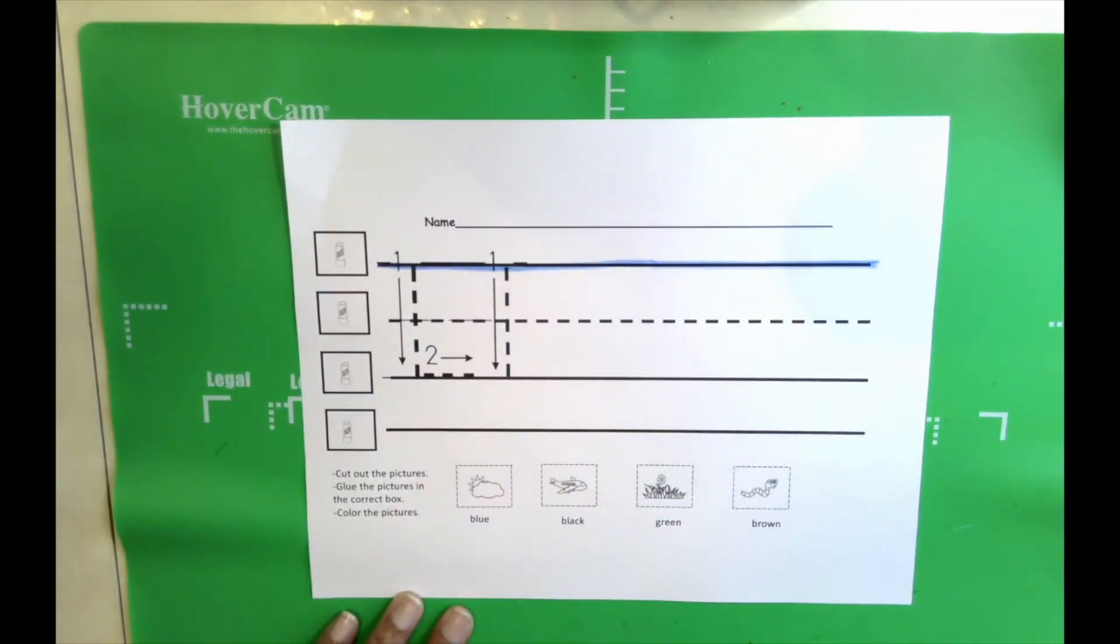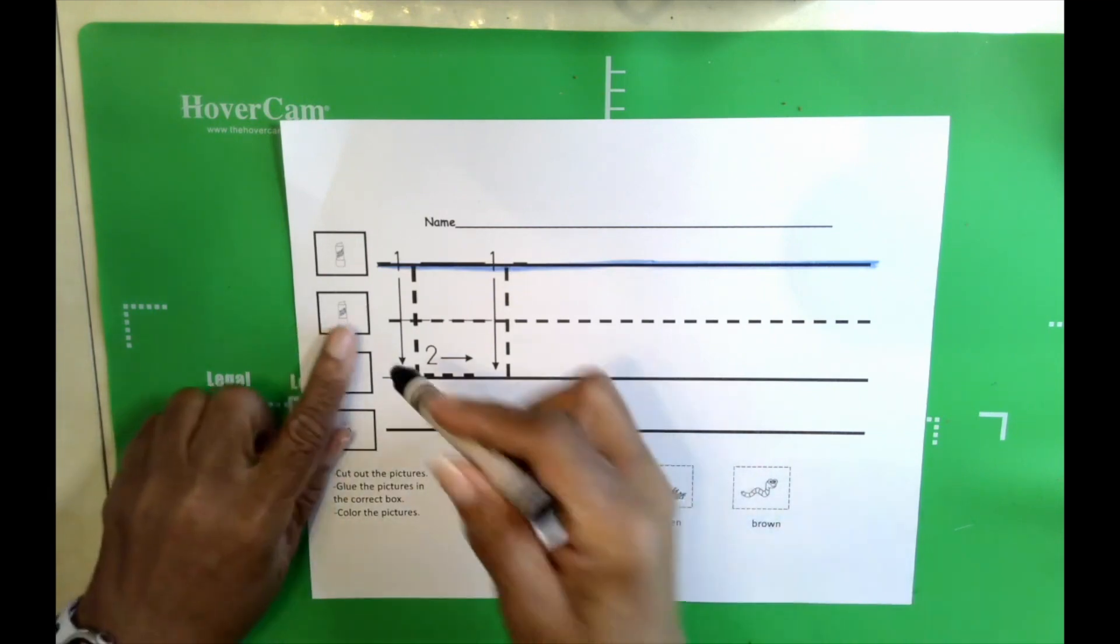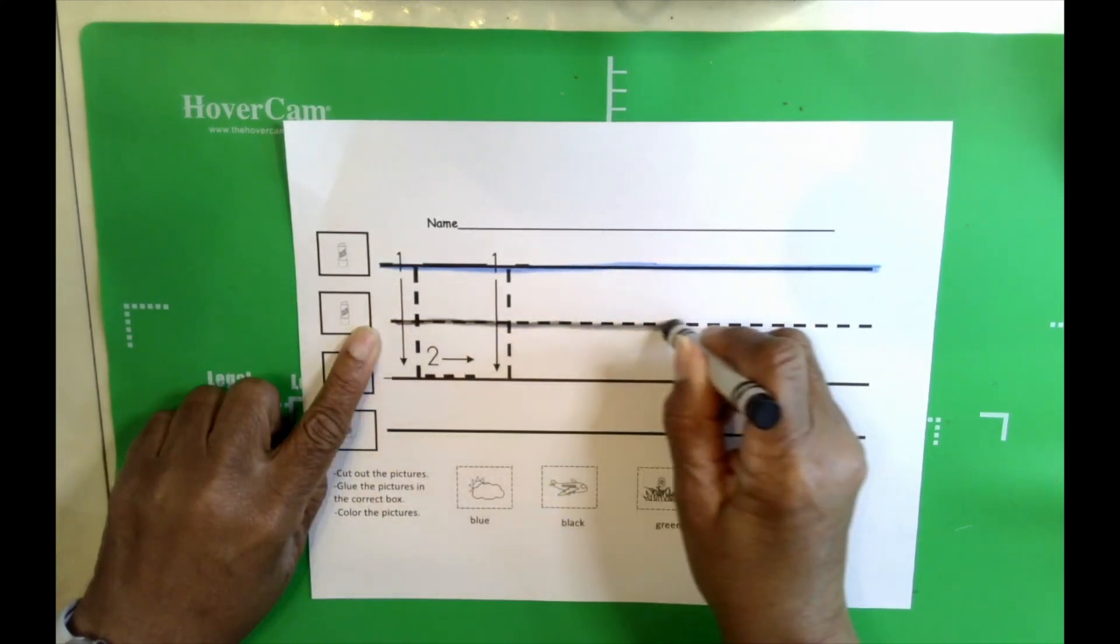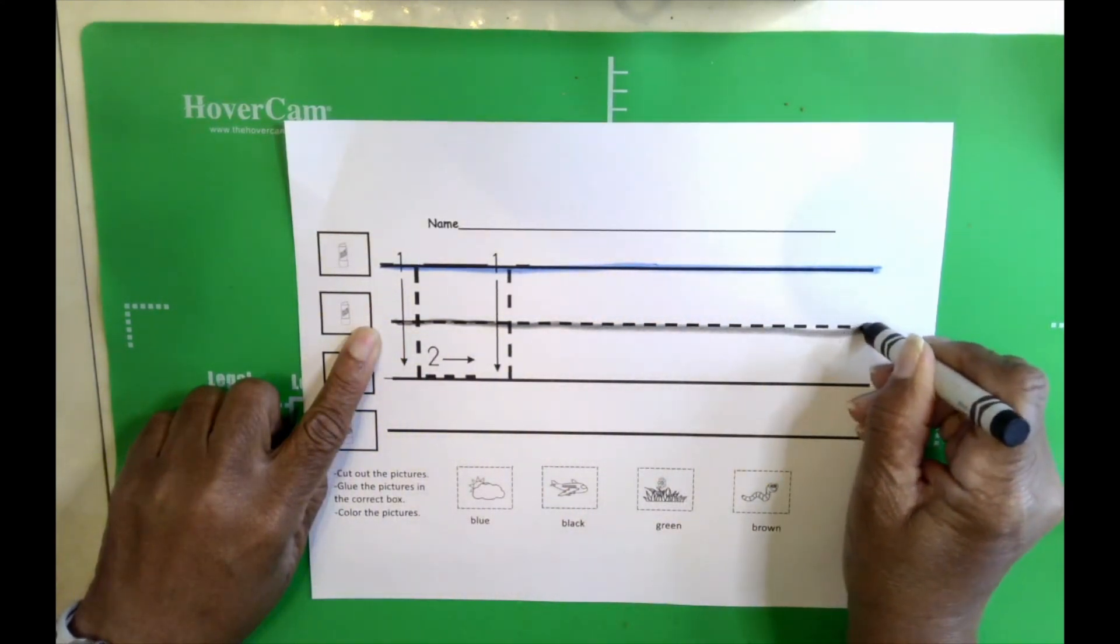We're going to color the second line black. This is the line with the dashes. We're just going to put it on the end and move your crayon on down.